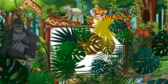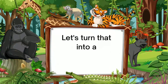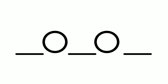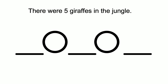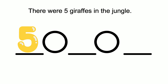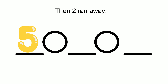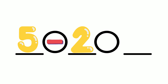Now let's turn that into a subtraction sentence. There were five giraffes in the jungle. I will use the number five to represent the five giraffes. Then two ran away. I will use the minus sign to represent the two giraffes that I crossed out.